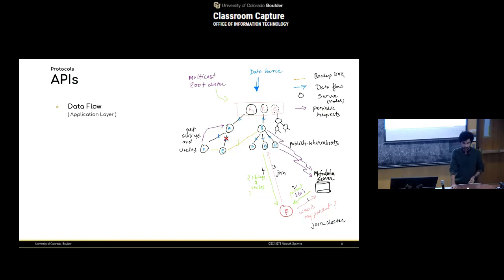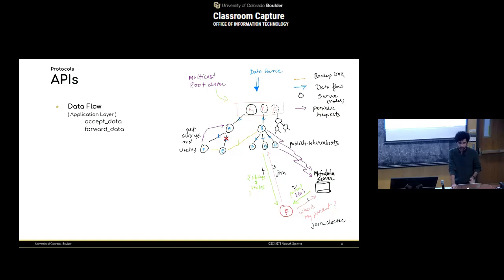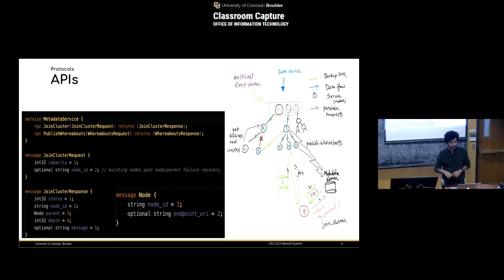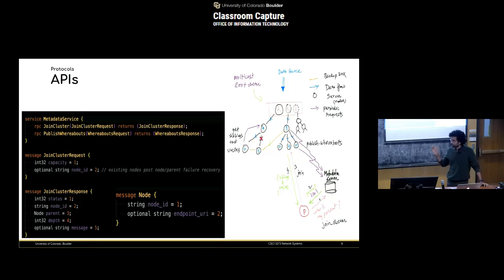I have implemented the infrastructure part; I haven't been able to implement the application layer yet. The idea is simple: the application and infrastructure layers communicate via message passing — infrastructure tells the application which children nodes to send data to, and the application process on the children receives it. There are broadly three APIs: the data flow API used by the application layer, which I've skipped for now, and then the cluster health reporting and the metadata service APIs.